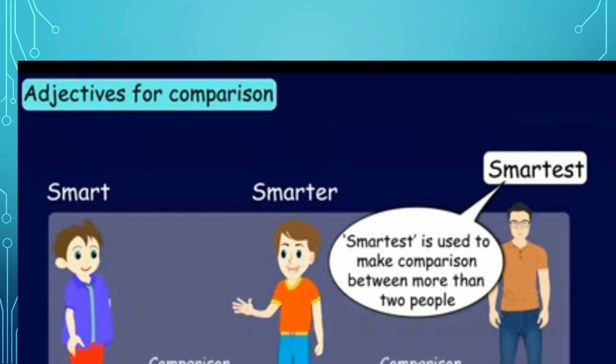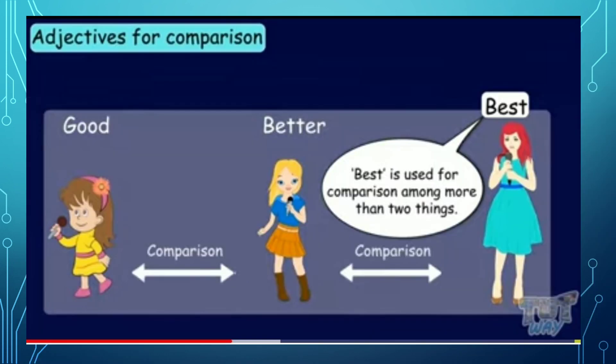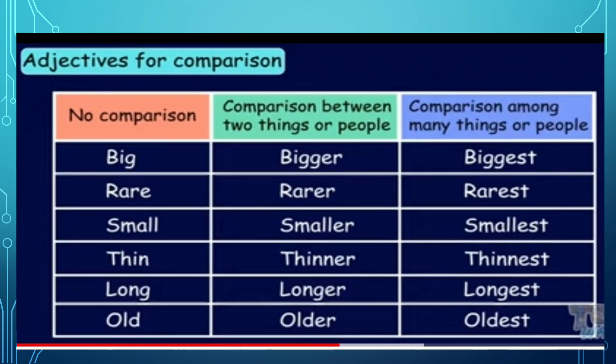Adjective for comparison — another example. Smart, smarter, smartest. If we compare more than two persons, you can use the word smartest. Another example: good — if we compare two persons, then you can say better. But if you compare with more persons, then you can say best. So good, better, best. Better is for two-person comparison, and best is used for comparison among more than two things.